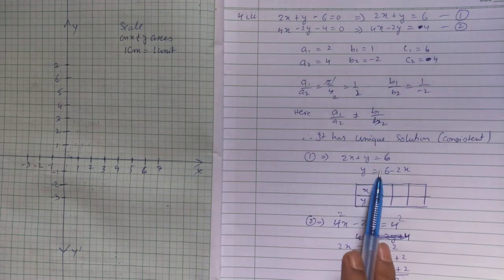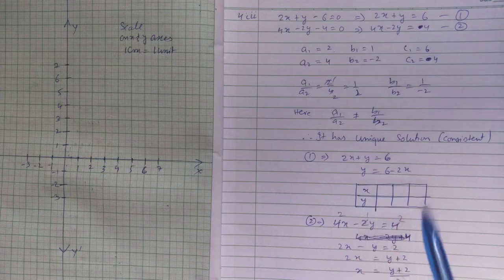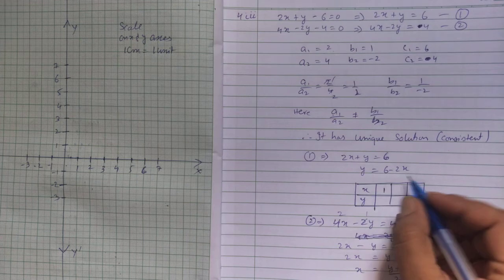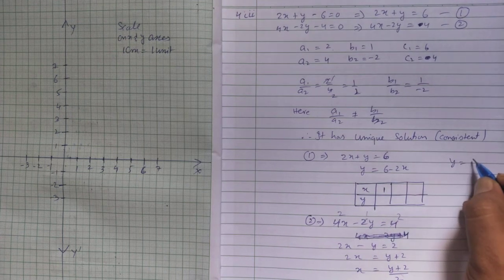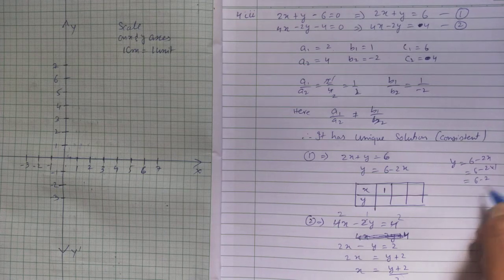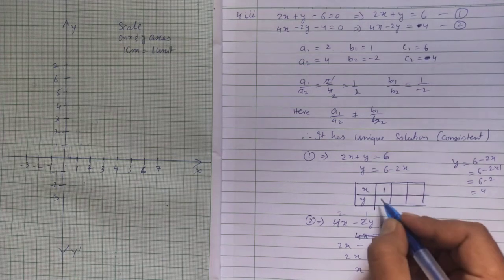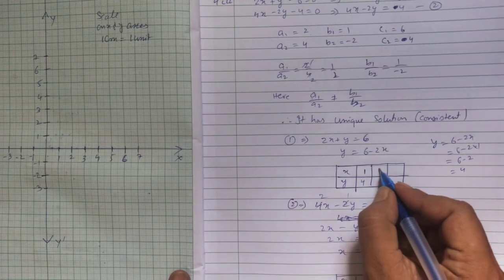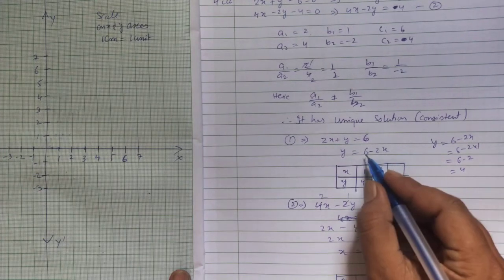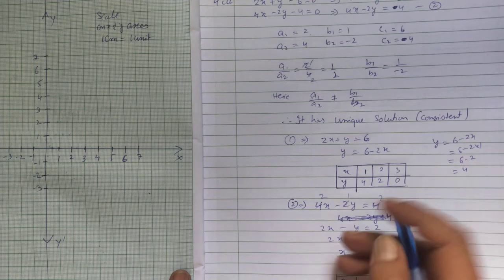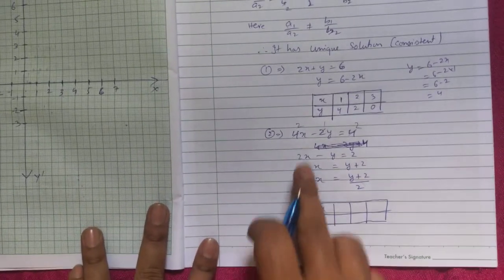Taking equation 1: 2x + y = 6, separating y gives y = 6 - 2x. If x=1, y = 6-2 = 4. If x=2, y = 6-4 = 2. If x=3, y = 0.